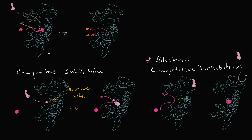Now, the inhibitor and the substrate might both compete for the active site in competitive inhibition, but you also have allosteric competitive inhibition, where they're still trying to compete for the enzyme — whoever gets there first gets the enzyme — but the inhibitor doesn't necessarily bind at the active site.